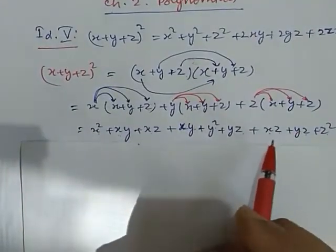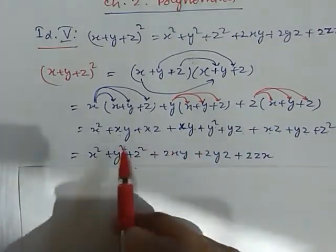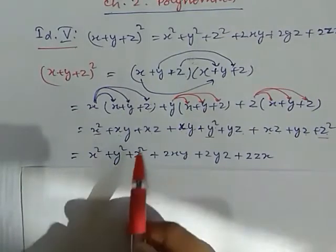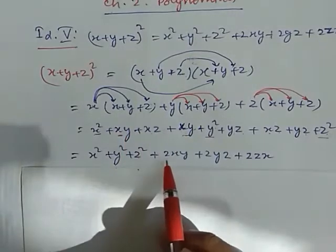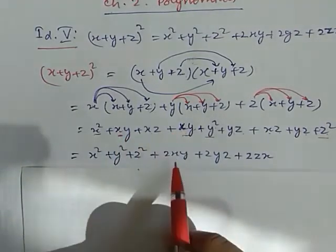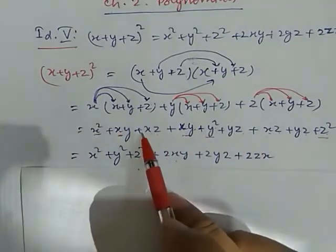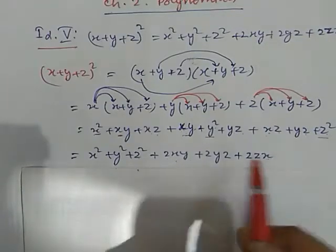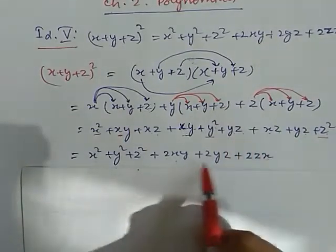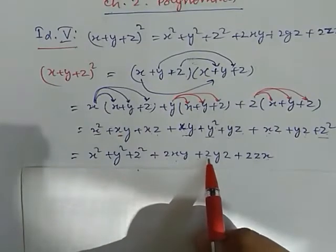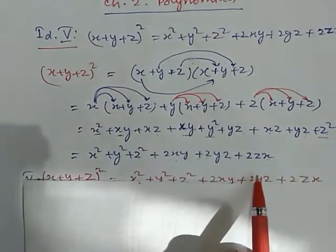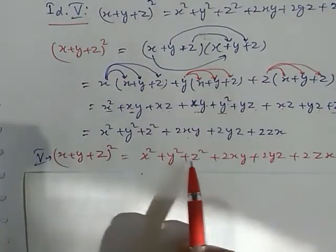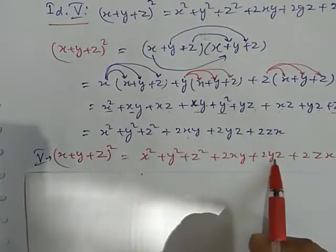Now check — what are the similar terms? Add them. First, we separate the square terms: x squared, y squared, and z squared. Now, xy and xy — twice xy, since both terms have the same sign. We write twice xy. xz and xz, also having the same sign, so adding them gives twice xz. And yz and yz, also same sign, so we add them and get twice yz. So, this can be written as: x plus y plus z whole square equals x squared plus y squared plus z squared plus twice xy plus twice yz plus twice zx.